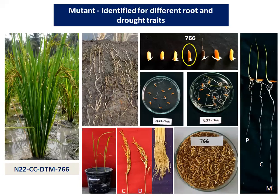Even though there is no water on the surface, my mutant will produce longer roots and will tend to absorb water even from deep water tables, using water effectively. Even under severe drought, my mutant will behave green. These are some of the key features I observed in my mutant.